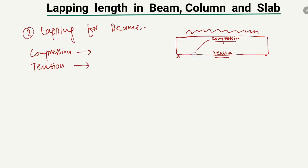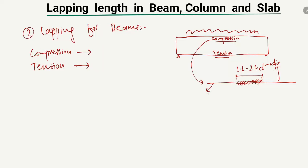For the compression case, this is one steel bar and this is another steel bar — they are overlapped. The lapping length for the compression zone is equal to 24D, where D is the diameter of the steel bar. For example, if the diameter of the steel bar is 20 millimeters, the lapping length for compression is 24 × 20 = 480 millimeters. So 480 millimeters is the overlapping length for bars in the compression zone.